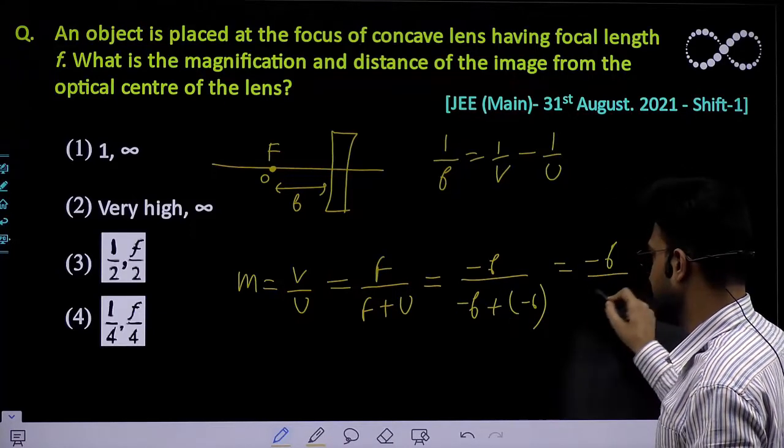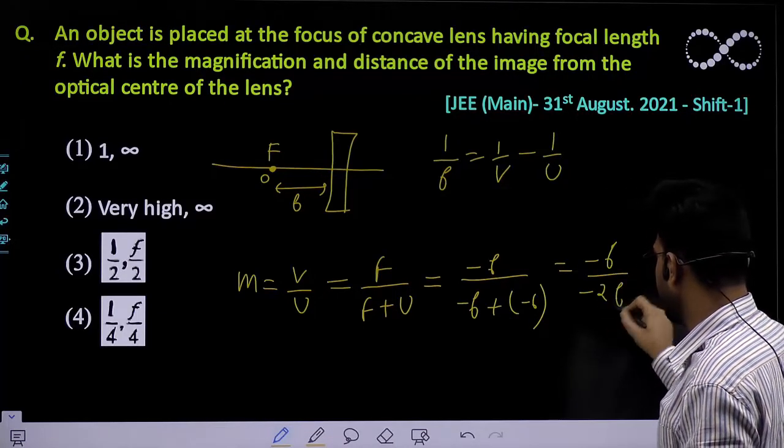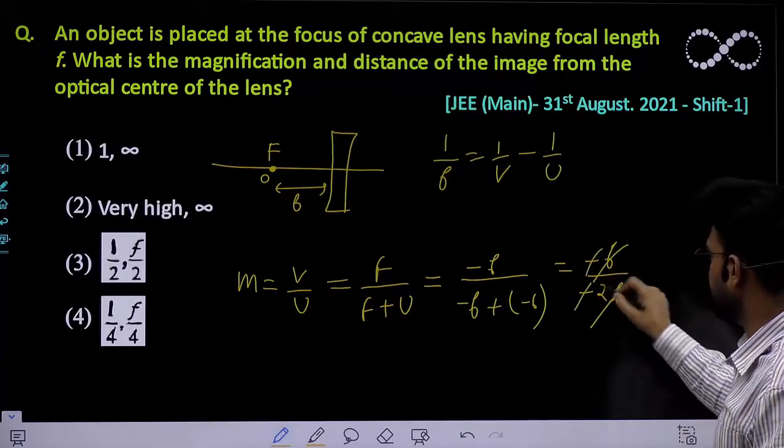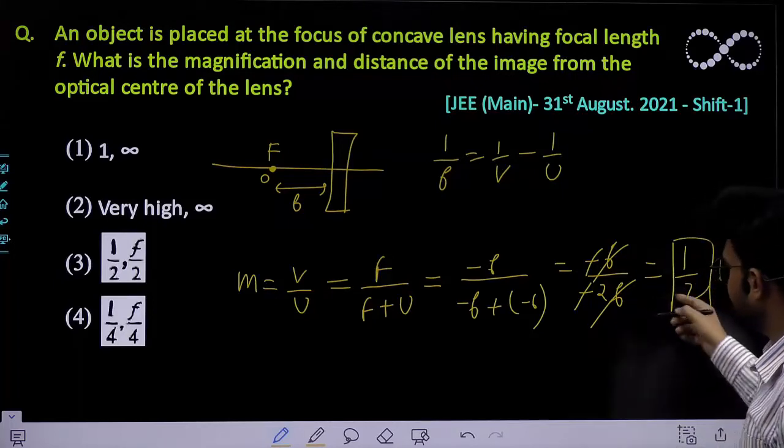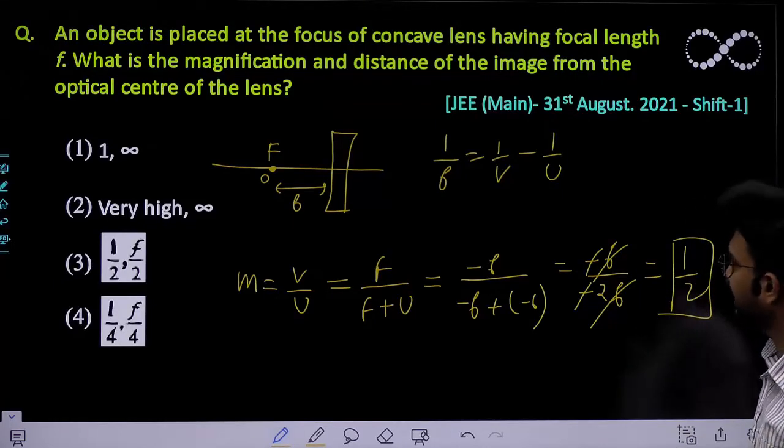The f terms cancel out, giving us magnification = 1/2. So the magnification comes out to be half.